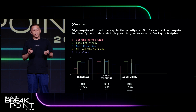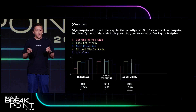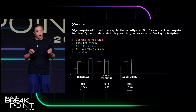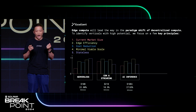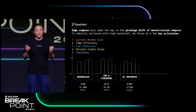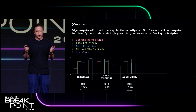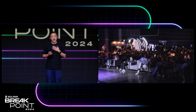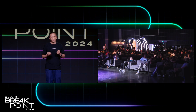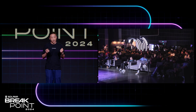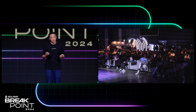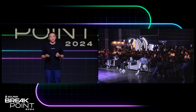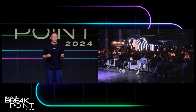What edge compute requires is locality and also dispersion. That's where DePIN comes in — it offers a way to efficiently organize compute resources on the edge and form a unified compute layer. We see edge compute as one of the most exciting areas in DePIN, with huge potential to fulfill the ever-growing demand for real-time compute.